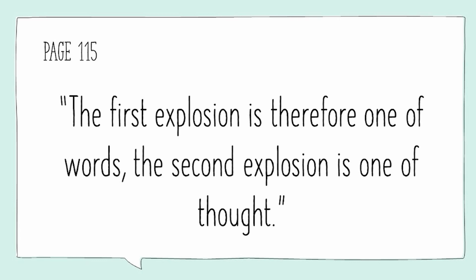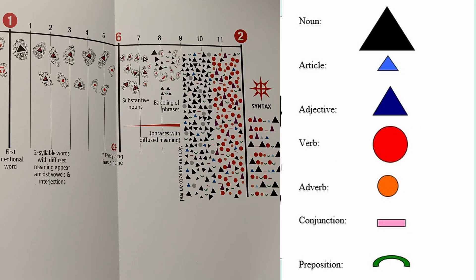On page 115, Maria Montessori says the first explosion is therefore one of words, and the second explosion is one of thought. We saw this in that second chart — the first explosion is that explosion of words, typically nouns. And then the second explosion happens. The child is expressing their thoughts or trying to express their thoughts, and this has a huge impact not just on their language development, but also on their development as a person.